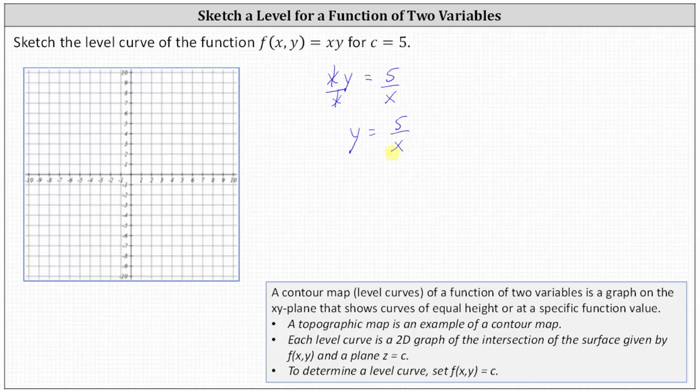Notice the function is undefined when x is zero. x equals zero represents a vertical asymptote of the function. Let's graph this in red. Also notice, as x increases or decreases without bound, or approaches positive or negative infinity, y approaches zero, indicating y equals zero as a horizontal asymptote of the rational function.